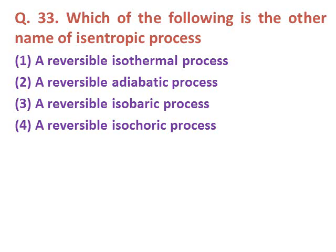Question thirty-three: Which of the following is the other name of an isentropic process? Option one: reversible isothermal process. Option two: reversible adiabatic process. Option three: reversible isobaric process. Option four: reversible isochoric process. The correct answer is reversible adiabatic process.